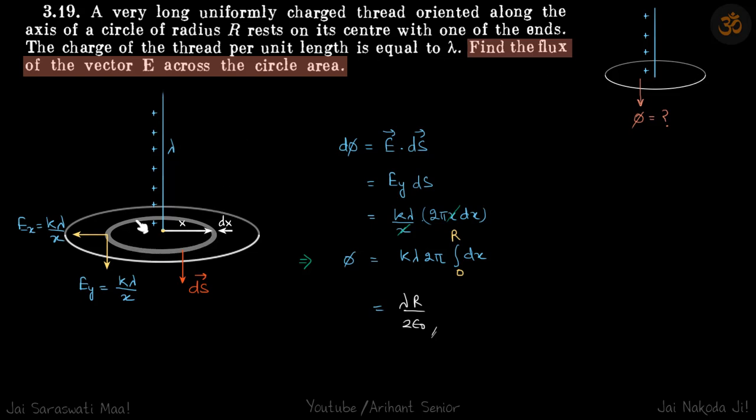We will take a small ring element of width dx at a distance x. The field due to the wire will be k lambda by x in this direction and k lambda by x in the y direction.